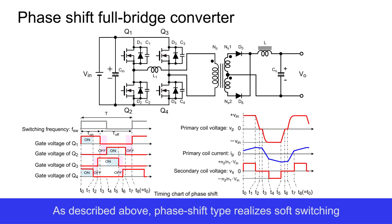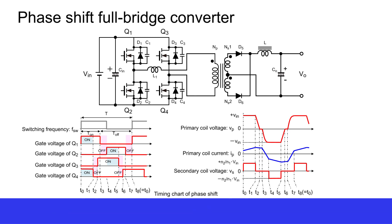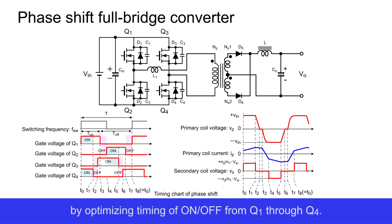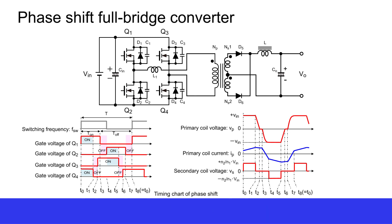As described above, the phase shift type realizes soft switching by optimizing the timing of on or off from Q1 through Q4. This concludes the explanation of the hard switch type full bridge converter and phase shift type full bridge converter. Thank you for your time.